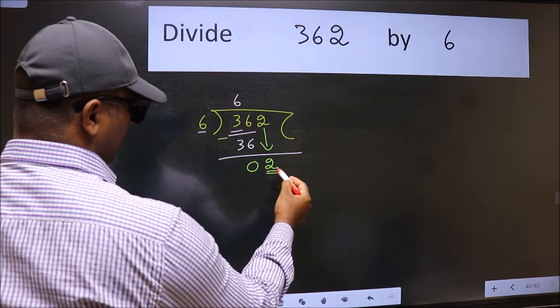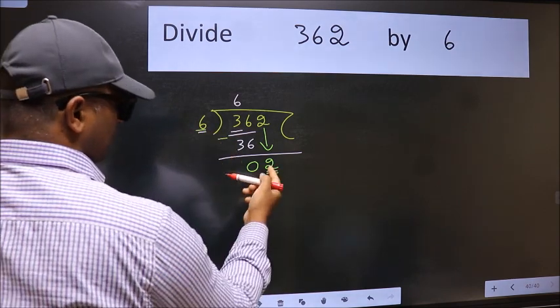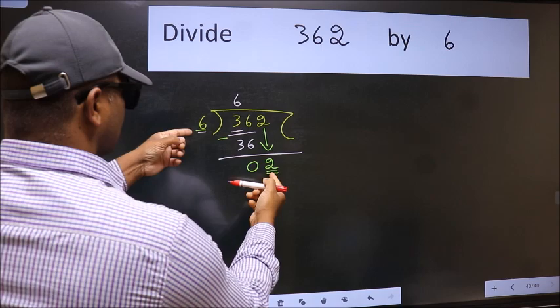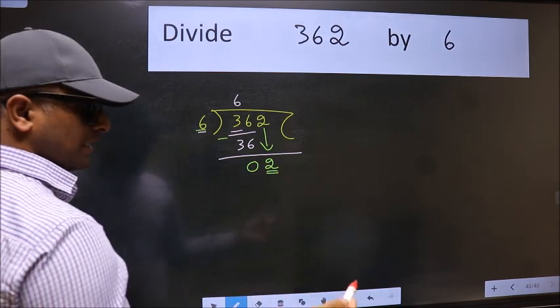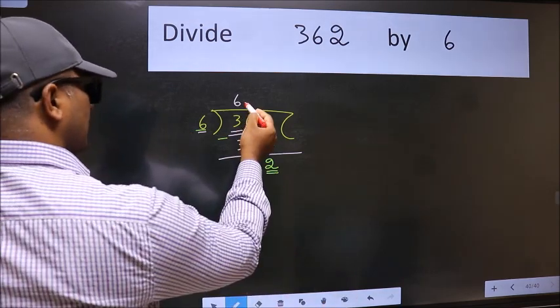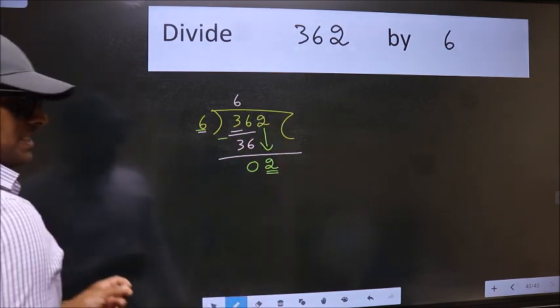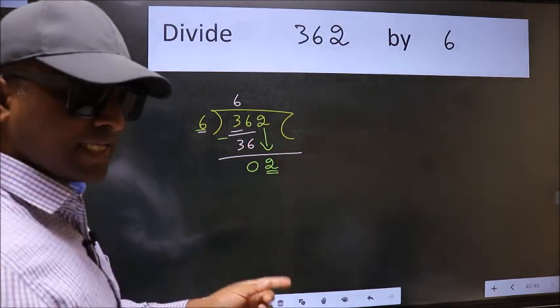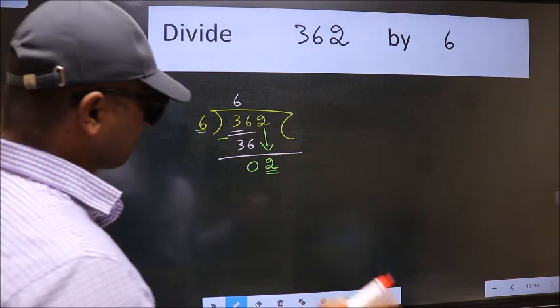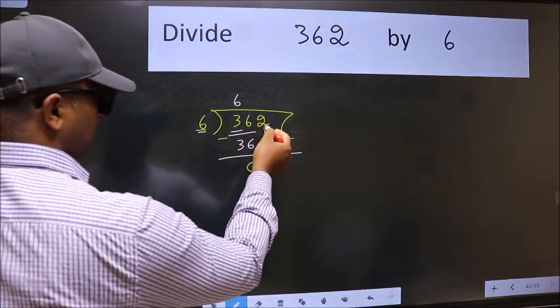Here we have 2 and here 6. 2 is smaller than 6. So, what many do is they directly put dot, take 0, which is wrong. Why is it wrong? Because just now you brought this number down.